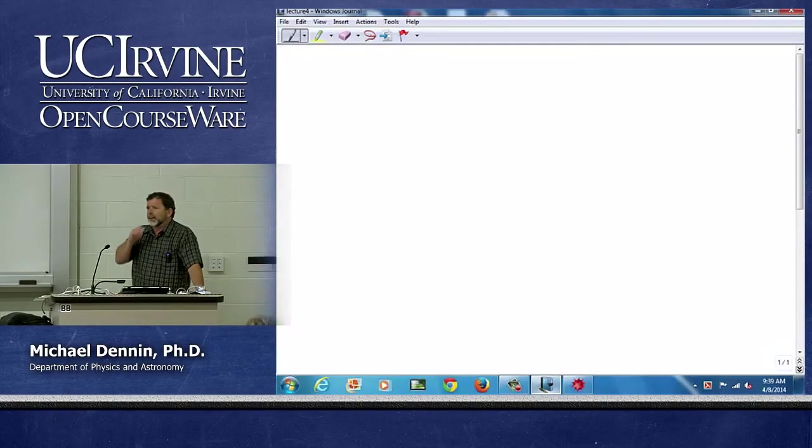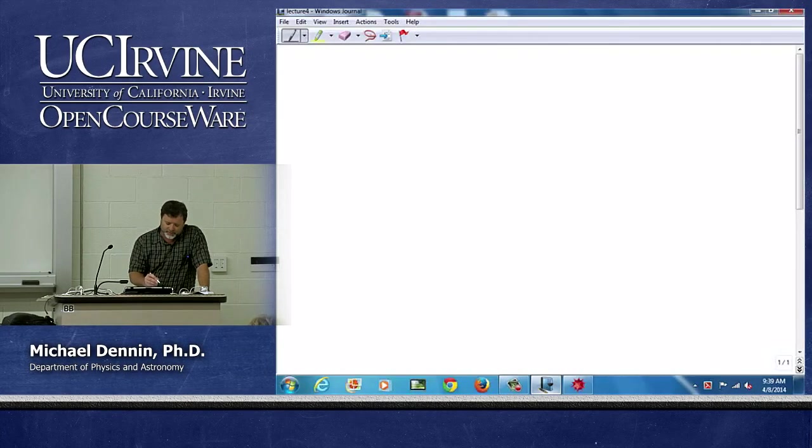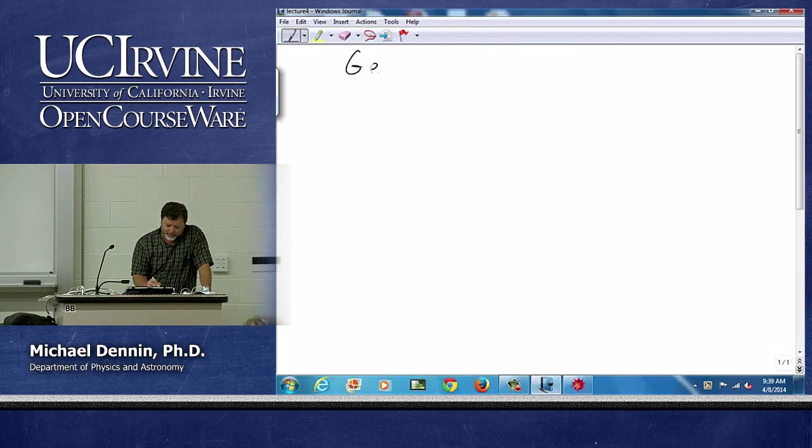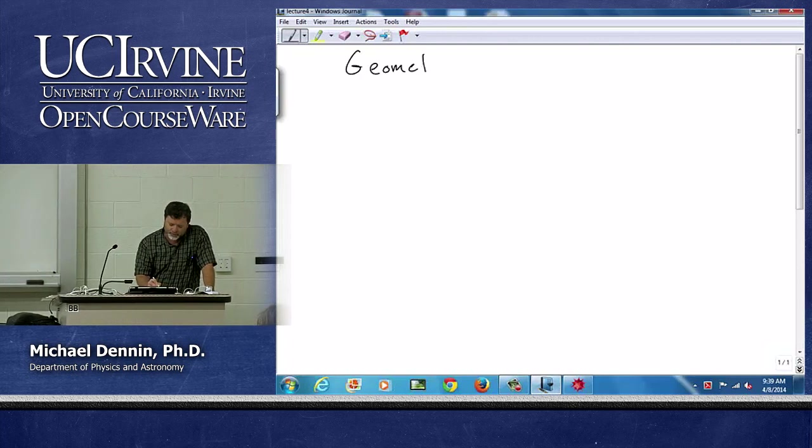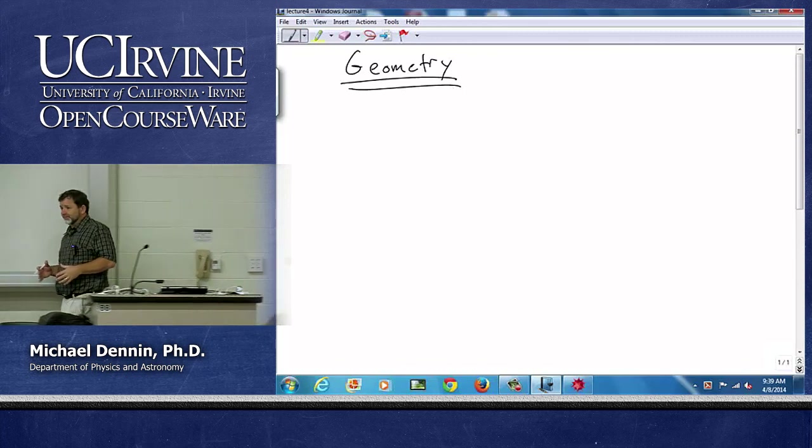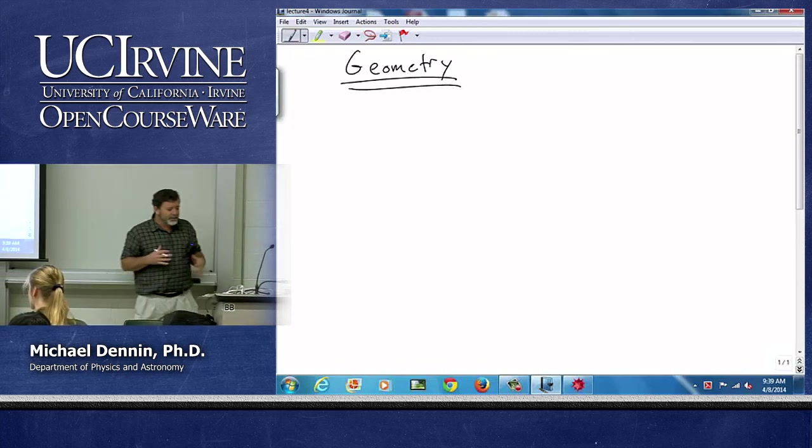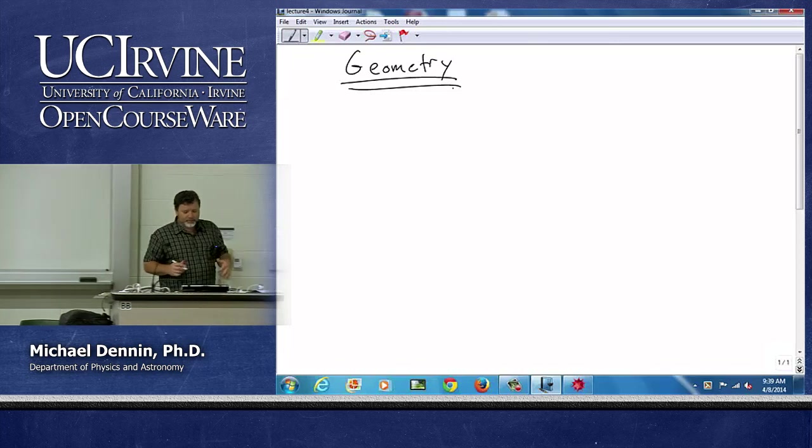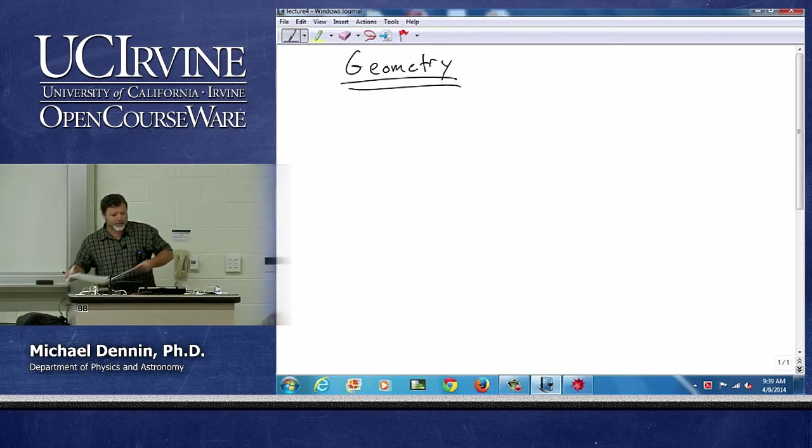The first thing I want to highlight, because it's very important, and it'll contrast with what we do next, is the geometry aspects of vectors. And in particular, the cross product and the dot product.